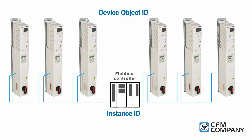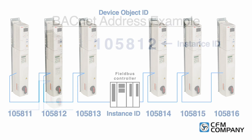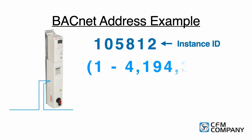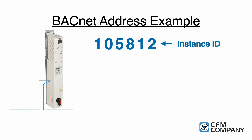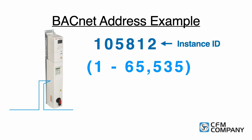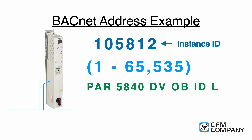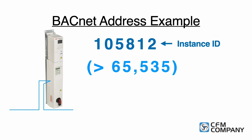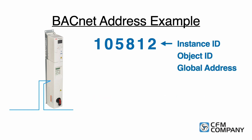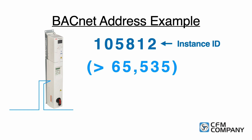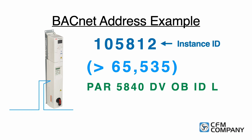Next is the device object ID. Remember that the device object ID needs to be unique across all BACnet devices in the building network. In the Eclipse bypass, the instance ID can be a value between 1 and 4,194,303. Because this number has the potential to be very large, it must be split into two parts. If the number is between 1 and 65,535, the whole number can be entered into parameter 5840. If the number is greater than 65,535, it must be split into a lower part and a higher part. For this video, the instance ID or object ID is 105,812. Since this number is greater than 65,535, it must be split into two parts.